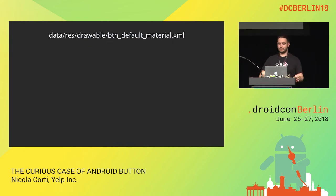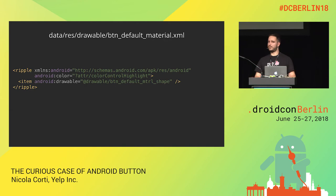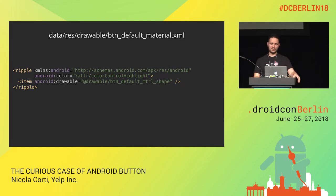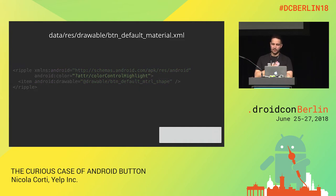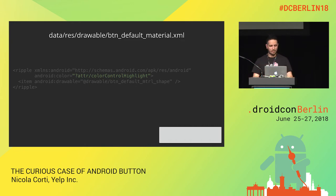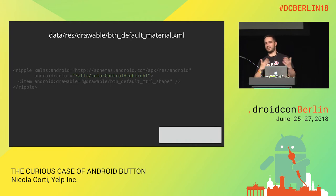There are just eight attributes inside — not many. Other things are inherited from Widget.Material and Widget. The min height and min width — particularly min height — ensure the button is big enough to be touchable. We have gravity to make sure text is centered. And the most important thing, where all the magic of buttons happens, is the background. As I said before, buttons are just TextViews with a background. Let's open that file: button_default_material — it's a resource file. It's a ripple applied on top of an item.